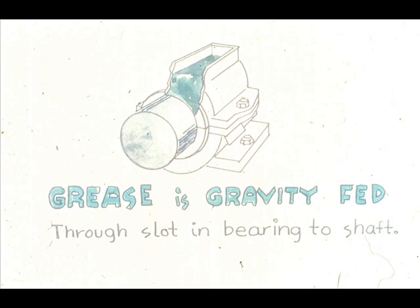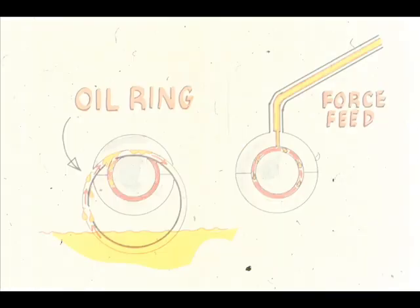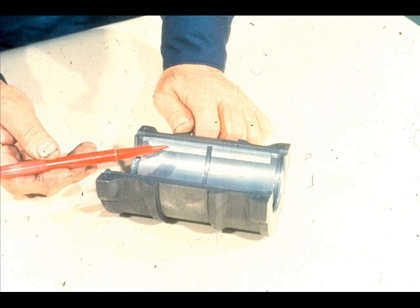You won't encounter grease lubrication often, since most sleeve bearings are lubricated with oil. Two basic methods of getting oil to the bearing are oil rings or a force-feed lube system. Once the oil reaches the bearing, it is distributed along the shaft through oil grooves machined into the surface of the bearing itself.